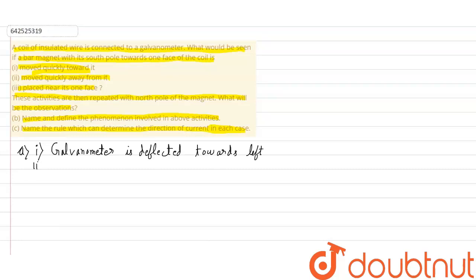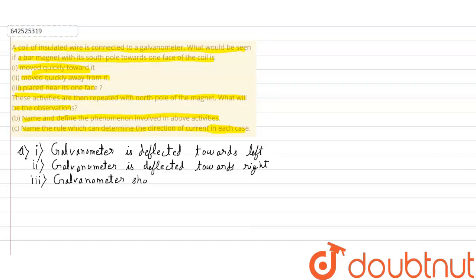In the second case, when the magnet is moved quickly away from the coil, the galvanometer is deflected towards the right. In the third case, when the magnet is placed near its one face and kept stationary, the galvanometer shows no deflection. These activities are then repeated with the north pole of the magnet.